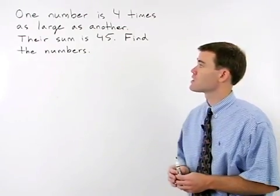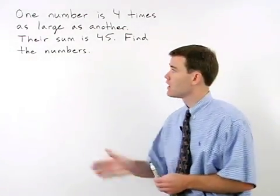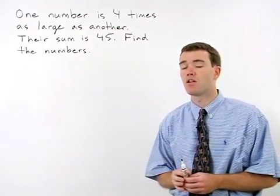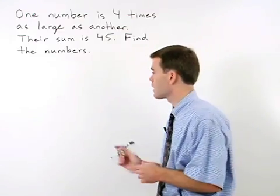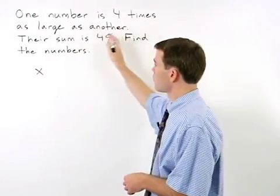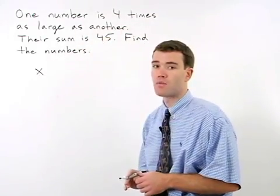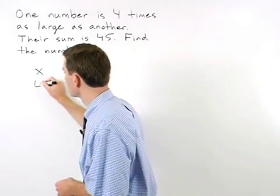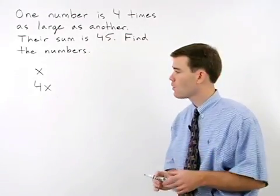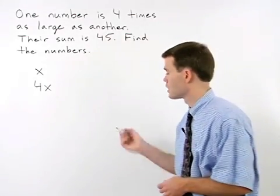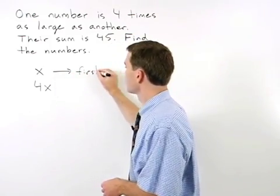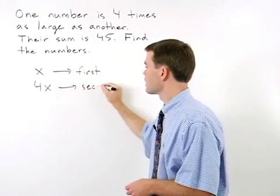One number is four times as large as another. The first sentence is going to tell us what variables we'll use to represent our numbers. So if you use x to represent one of our numbers and one number is four times as large as another, we can use 4x to represent our other number. And always label your variables. Let's call x our first number and 4x our second number.